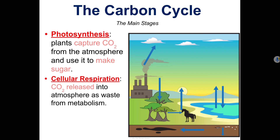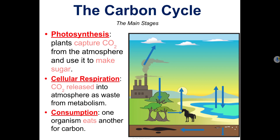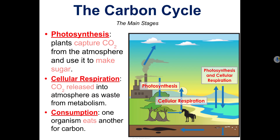Metabolism is all the chemical reactions that take place in your cells either to use or to produce energy. Next is consumption. Consumption occurs when an organism eats another organism and gets their carbon. In the picture, you see trees and grass performing photosynthesis and the horse consuming the grass and performing cellular respiration. All of this is happening on land, but photosynthesis and cellular respiration also happen in aquatic environments too, like the lake in this picture.